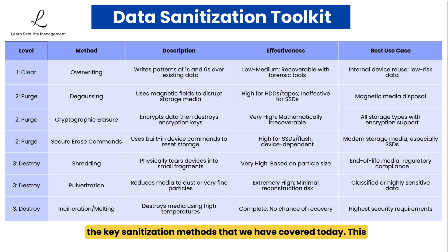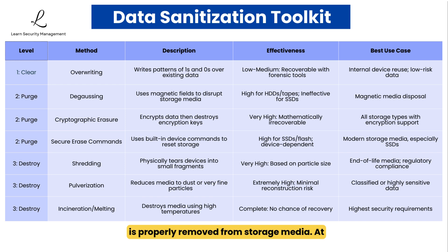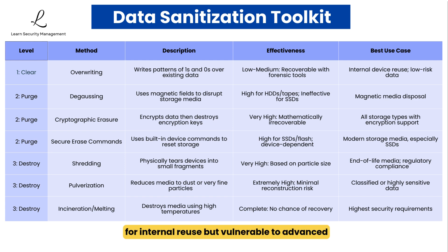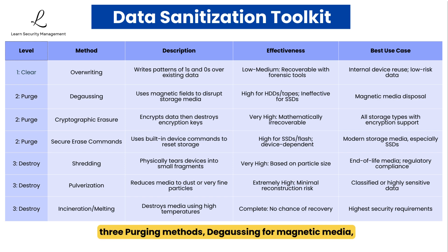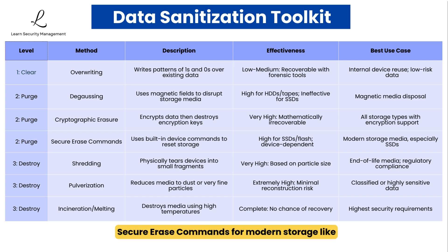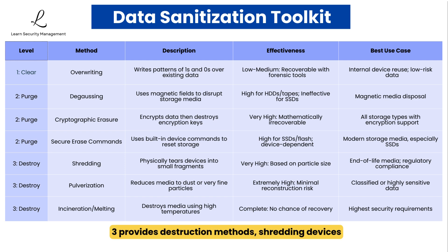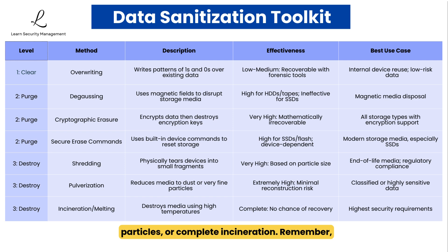Let's summarize the key sanitization methods covered today. This table represents your complete toolkit for ensuring data is properly removed from storage media. At level 1, we have clearing through overwriting — perfect for internal reuse but vulnerable to advanced recovery techniques. Level 2 offers three purging methods: degaussing for magnetic media, cryptographic erasure for encrypted devices, and secure erase commands for modern storage like SSDs. For the highest security, level 3 provides destruction methods: shredding devices into fragments, pulverization into fine particles, or complete incineration.